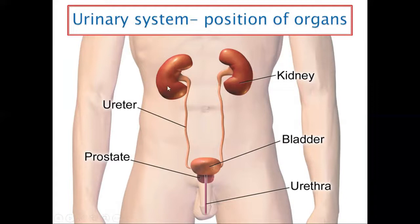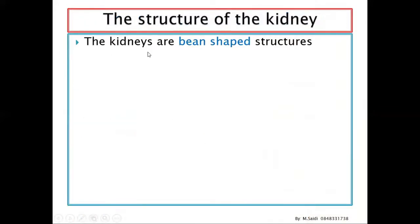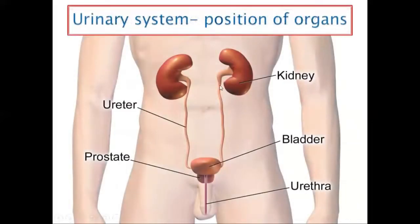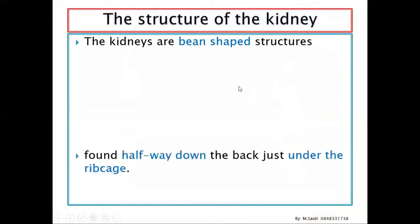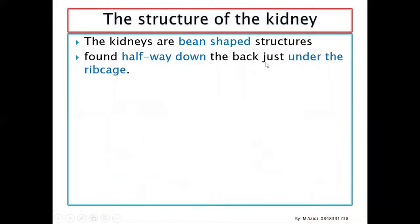Here we can see how the kidney is located in the body. There are two kidneys — one is slightly lower and another is a little bit higher. The tubes which join the kidney to the bladder are called the ureters, and the tube which connects the bladder to outside the body is the urethra. The kidneys are bean-shaped, formed halfway down the back just under the rib cage.